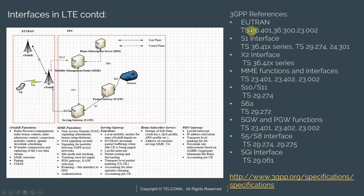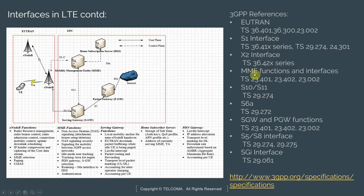For every interface, 3GPP has a series of documents that go into the nitty-gritty details. Here I have listed all the references from 3GPP for each of these interfaces. The interfaces within the E-UTRAN are explained in certain documents; for S1 there are similarly specific documents; for X2 there are dedicated documents; and for the MME there are a bunch of documents, and so on and so forth.